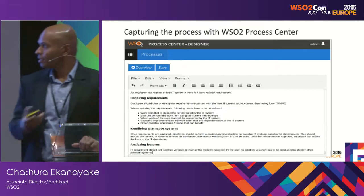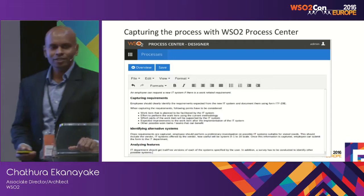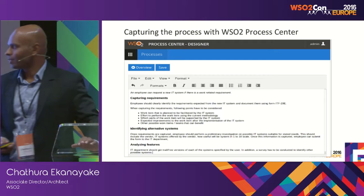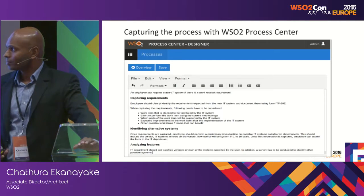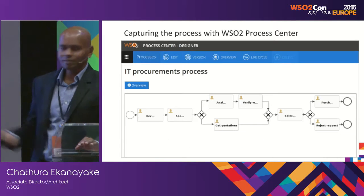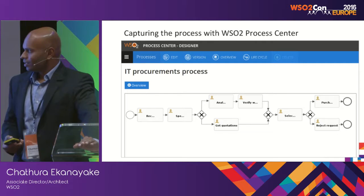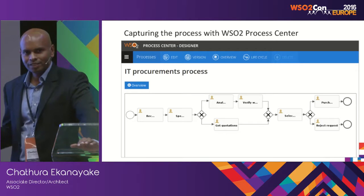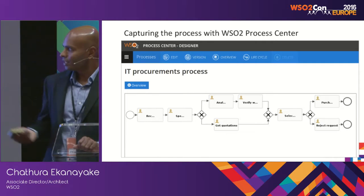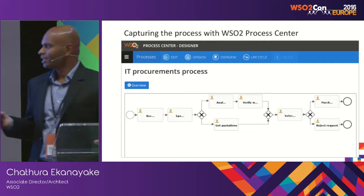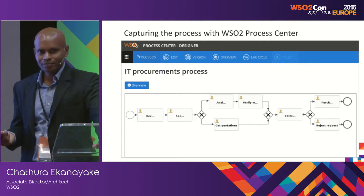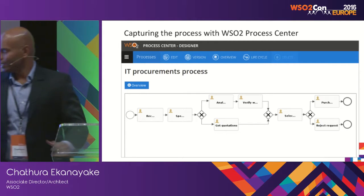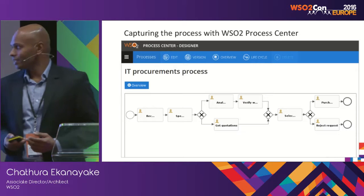He can document the process in many ways. If he likes to document using plain text, he can do it. Or if he wants to associate a BPMN model, he can do that as well. He can also associate PDF documents, or create the process flow using flowcharts. There are many ways to document processes. This is the first step in using Process Centre for systematic management of an organisation.